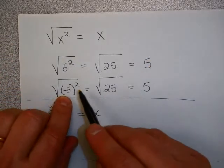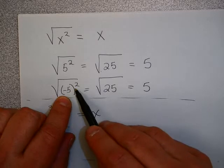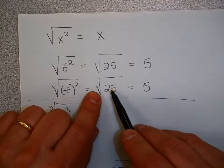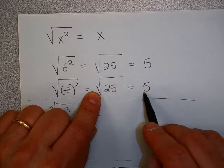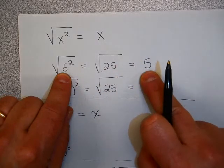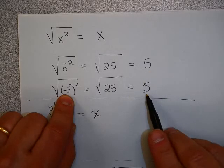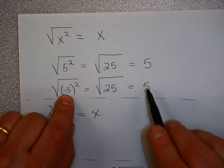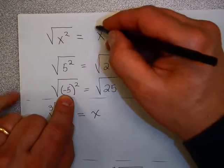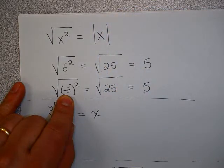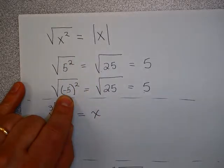But if x is negative, the square root of, for example, negative 5 squared, negative 5 squared is still 25. And the square root of 25, since this means positive square root, is 5. In this case, x was 5 and the answer was x. In this case, x was negative 5 and the answer wasn't x. How do I get an answer so that the number is the same but the sign is always positive? I put absolute value around it. So technically, the square root of x squared equals the absolute value of x.